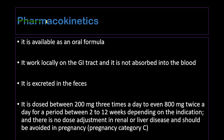Regarding pharmacokinetics, Rifaximin is available as an oral formulation only and works locally on the gastrointestinal tract. It is not absorbed into the blood and is excreted in the feces. Dosing ranges from 200 mg three times daily to 800 mg twice daily for a period of 2 to 12 weeks depending on the indication. There is no dose adjustment needed for renal or liver disease since the drug is not systemically absorbed. This medication should be avoided in pregnancy and is classified as pregnancy category C, meaning it may cause harm to the fetus.